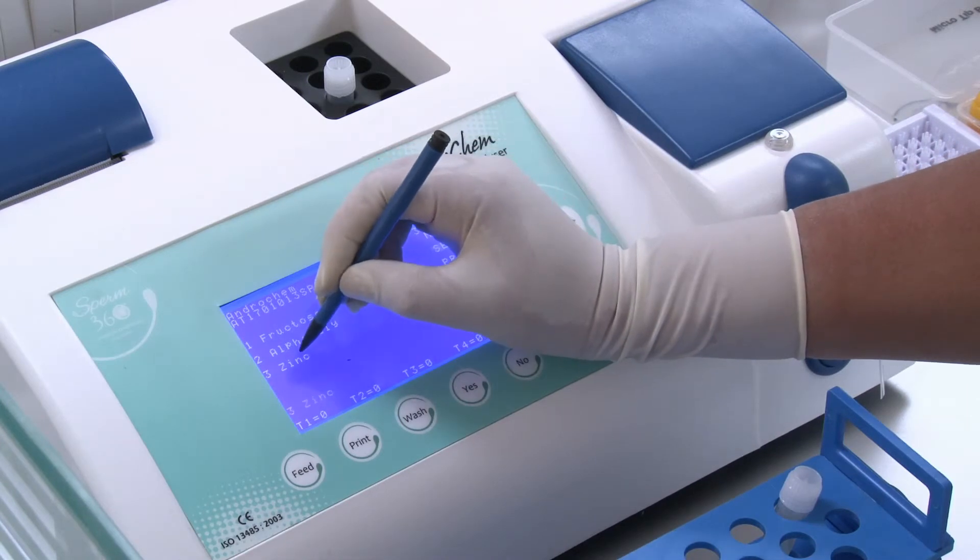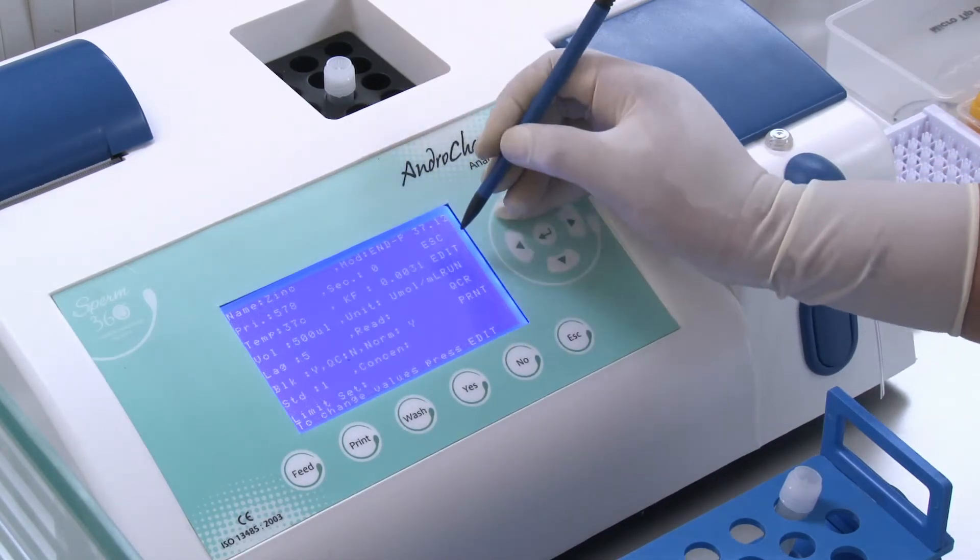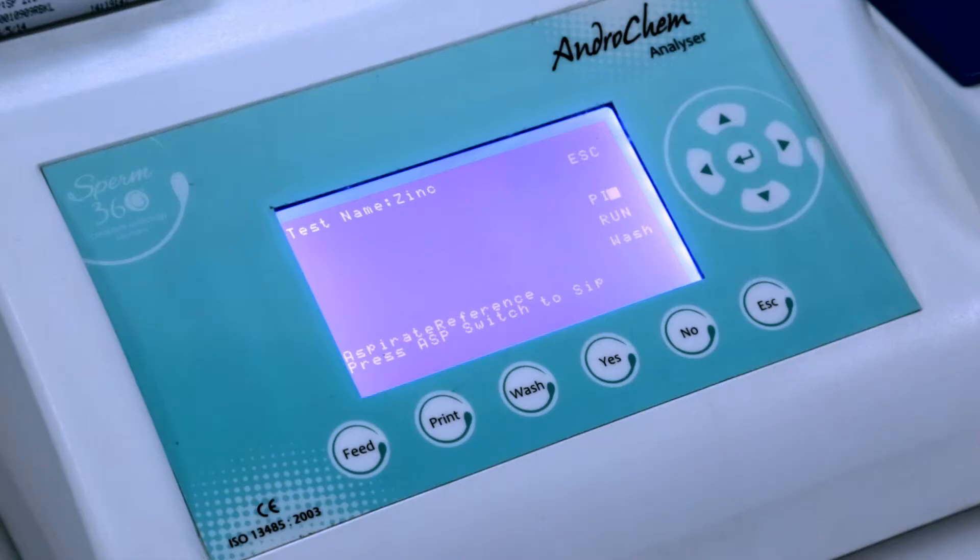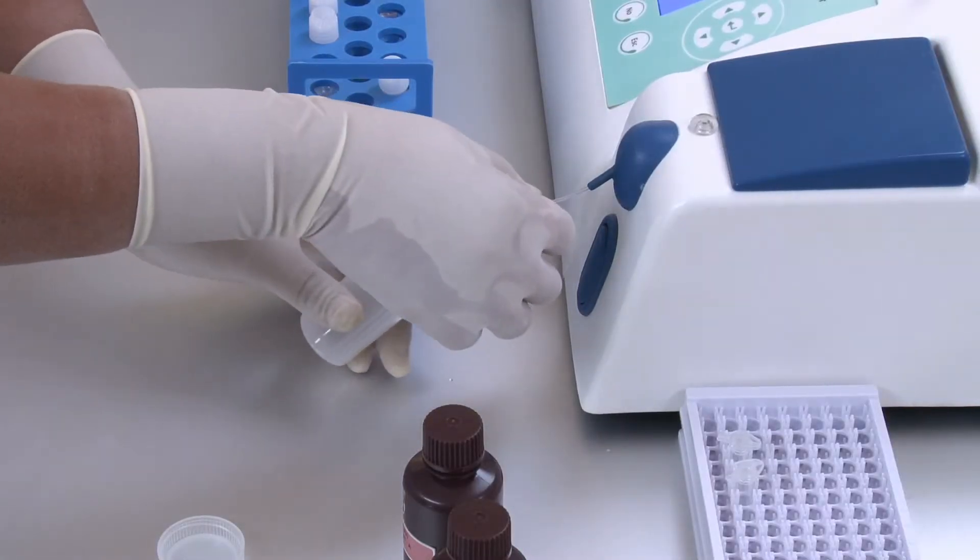Choose the program Zinc from the Androchem analyzer and choose Run. The screen displays Aspirate reference. Aspirate distilled water.